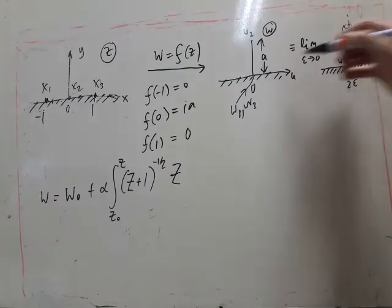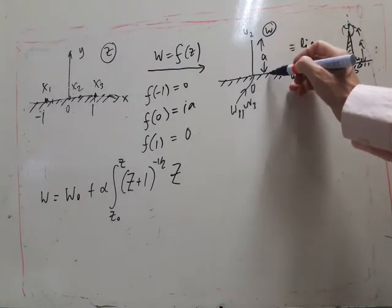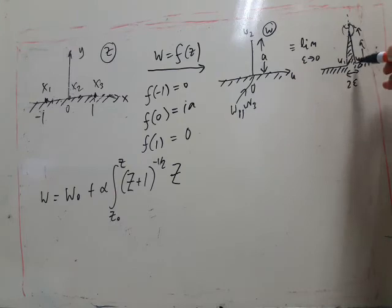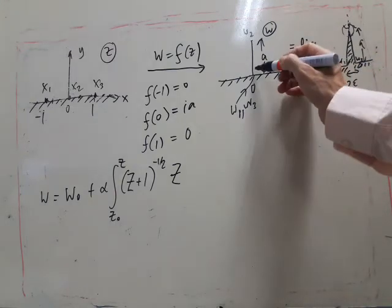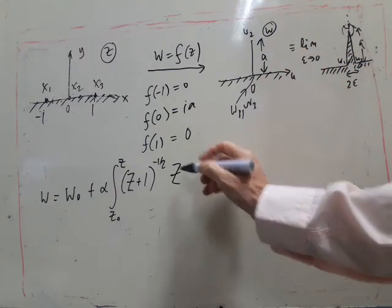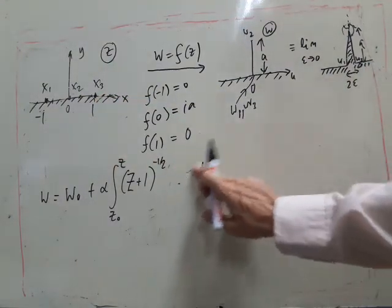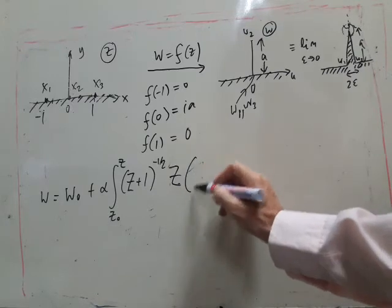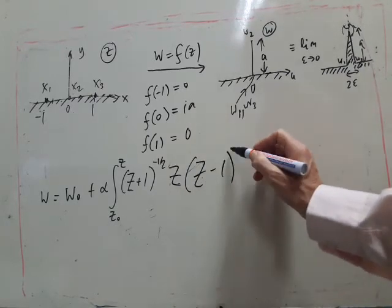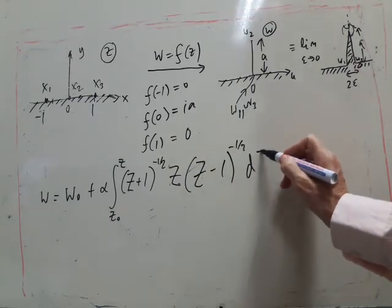And then the last bit, going down here, and then here, this is just the usual right angle here, so that's going to be similar to before. So it's z minus 1, minus 1 half.